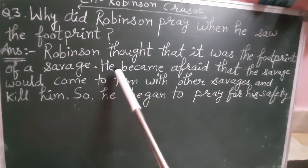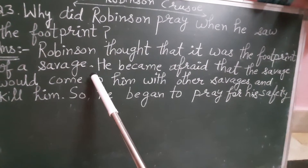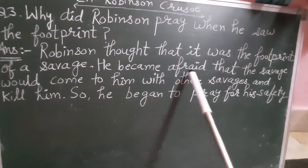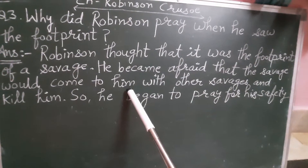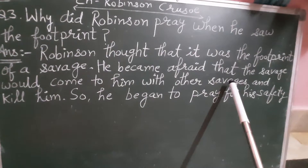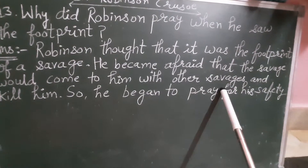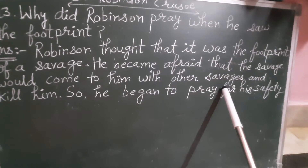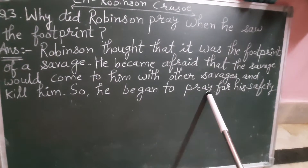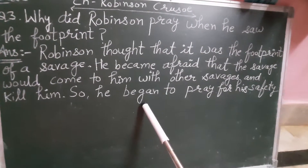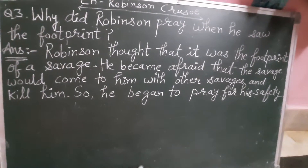Robinson thought that it was the footprint of a savage. Robinson ne socha ki yeh footprint ek jangli aadmi ki hai. He became afraid that the savage would come to him with other savages and kill him. So he began to pray for his safety — isliye usne apni safety ke liye pray karna shuru kar diya.